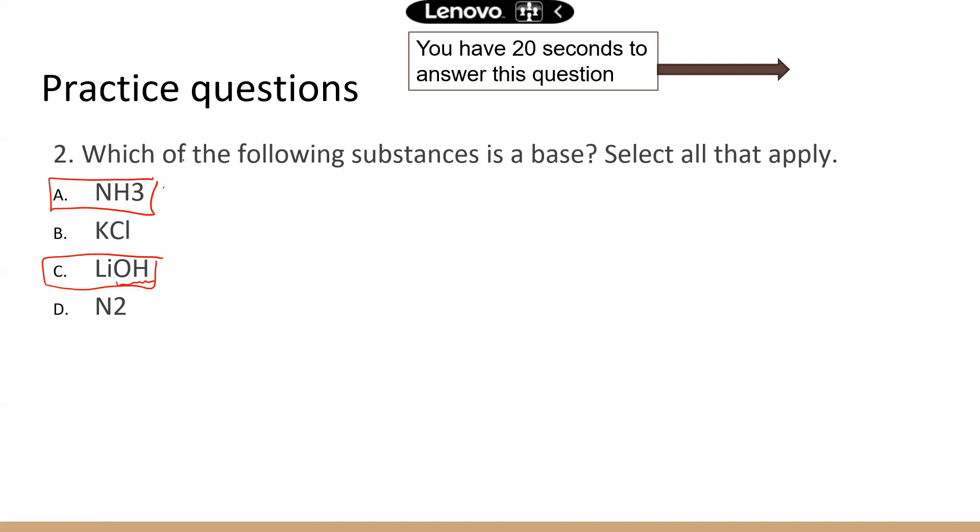Typically, if you have a metal element with OH, that indicates that this is probably a base. Like lithium hydroxide or sodium hydroxide, potassium hydroxide, calcium hydroxide, aluminum hydroxide. So these things, if you have some kind of metal with OH, that's probably a base. And also A, ammonia, that's also a base. Next question.